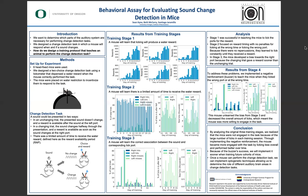In graph two, I found that they were barely licking during the RAP, while graph three revealed that they were licking quite a lot despite missing many of the trials. After training the mice on stage three, it became clear that the mice had not learned the change detection task as we had planned.